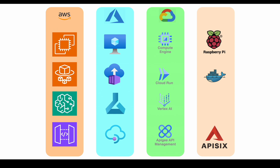Cloud providers also have managed AI tools: Vertex AI is Google's, Azure has ML Studio, and AWS has SageMaker. For a more mature setup with lots of models, we'd use API gateways — APISIX is something we could run on the Raspberry Pi, Apigee is Google's version, API Management is Azure's version, and API Gateway is AWS's. Effectively we can run everything on a virtual machine in the cloud, or in per-second containers as we've covered in other videos, and use AI gateways to tie lots of models together.